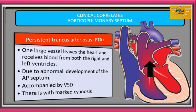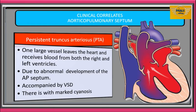PTA is caused by abnormal or partial development of the aorticopulmonary septum. PTA is usually accompanied by a membranous ventricular septal defect. It's also associated with clinically marked cyanosis, which is a bluish coloration of the skin caused by low blood oxygen level.